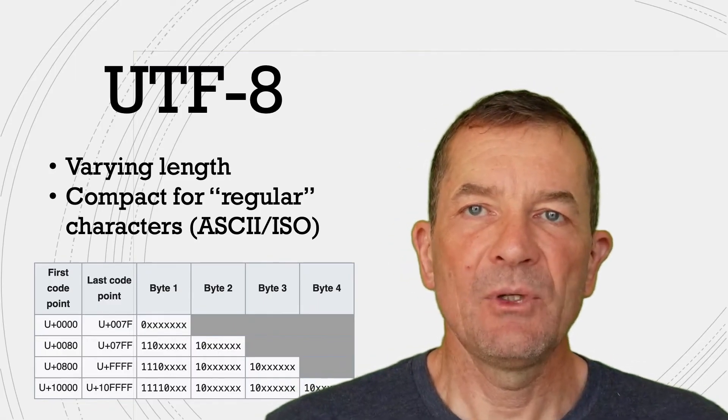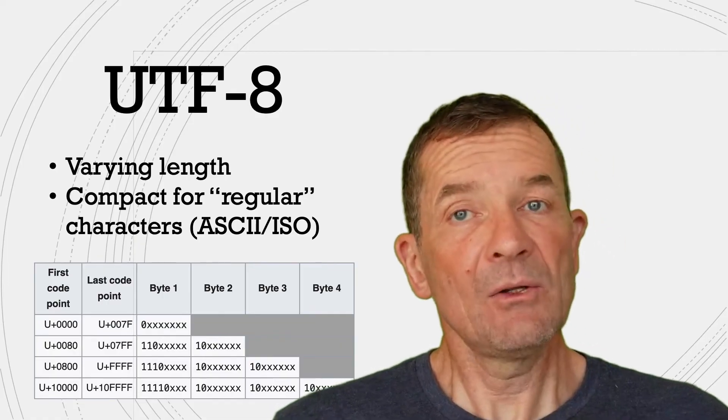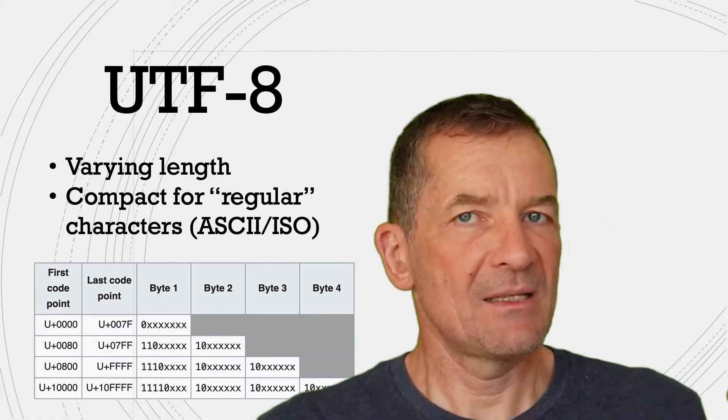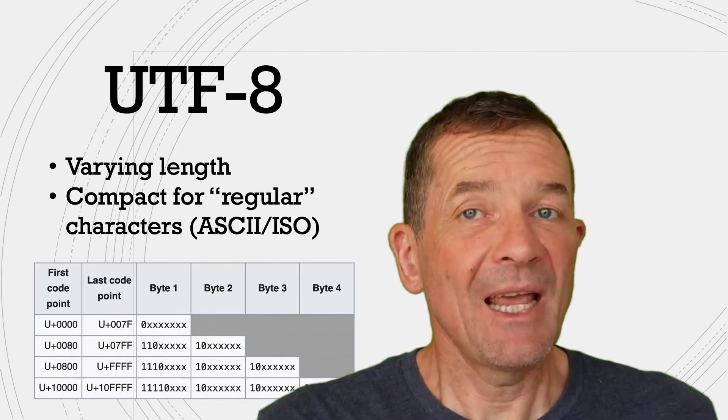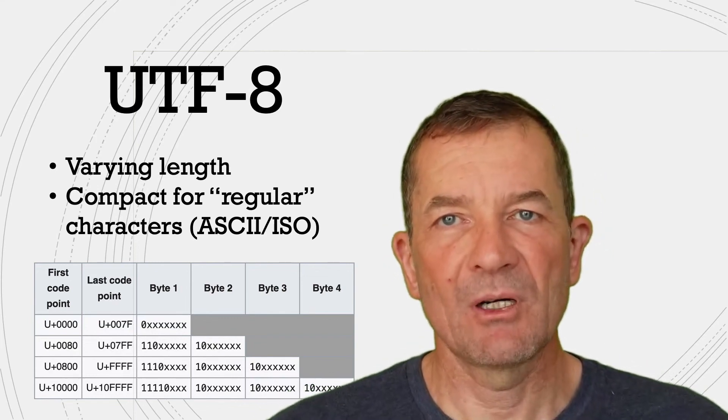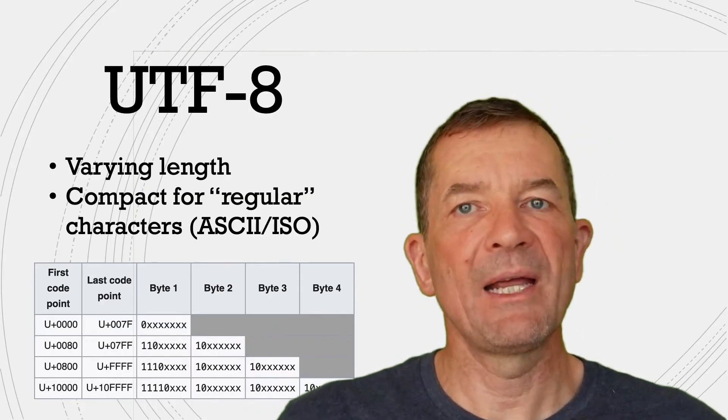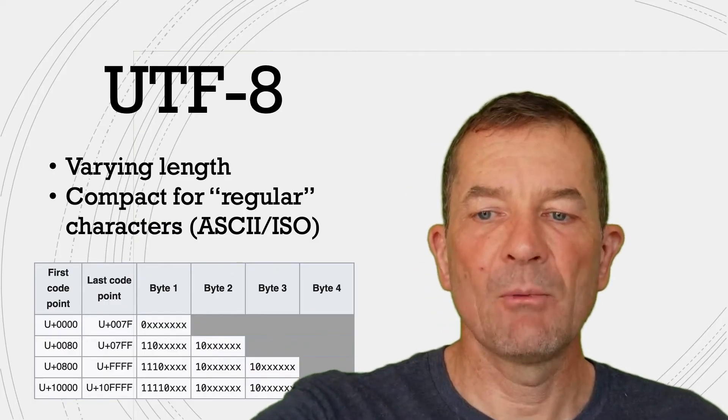This means that UTF-8 is relatively complex, but it also means that regular texts with very simple ASCII-based character repertoires can be encoded in a very compact way because it's still one byte per character. It makes it pretty compact.